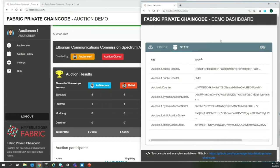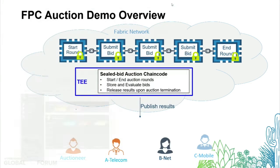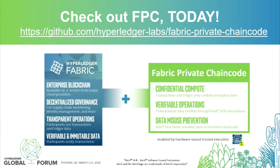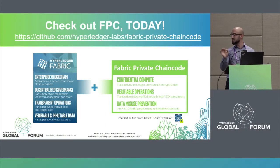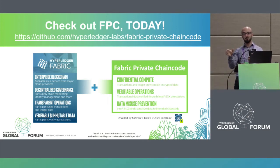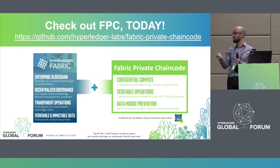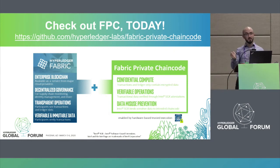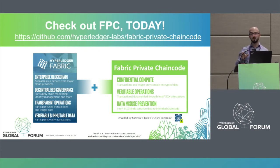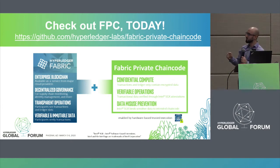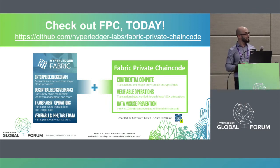To recap: Fabric Private Chaincode is an extension of Hyperledger Fabric to bring data confidentiality at the peers — data not visible to the peers or even to the organizations running those peers — achieved through the combination of Fabric and a trusted execution environment. Although the data is confidential, all parties can verify that operations were performed as intended, giving you operational transparency from Fabric plus confidentiality and verifiability from Fabric Private Chaincode. The demo and all the code are on GitHub.